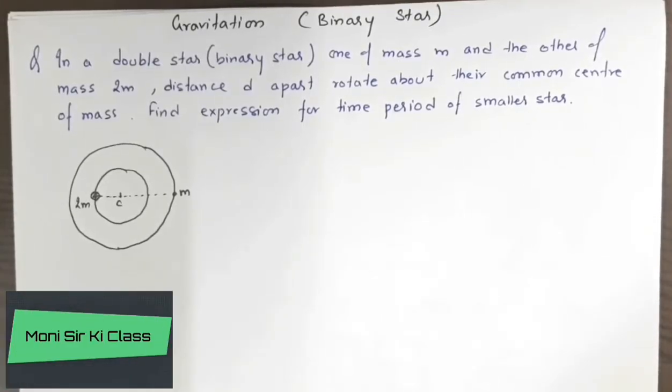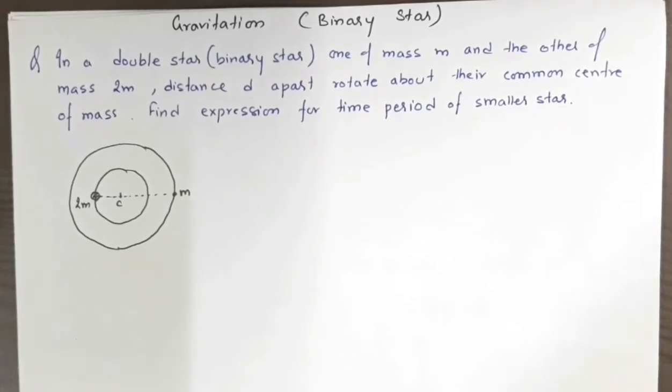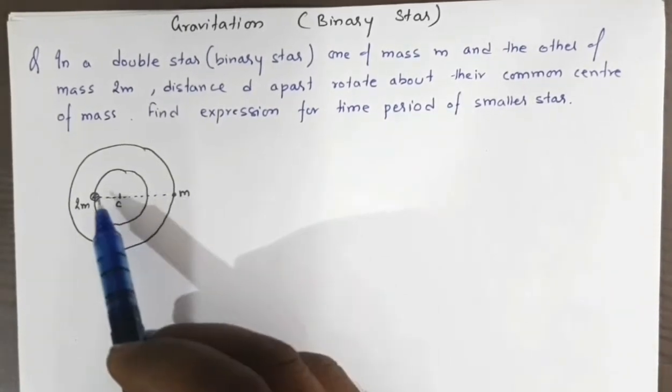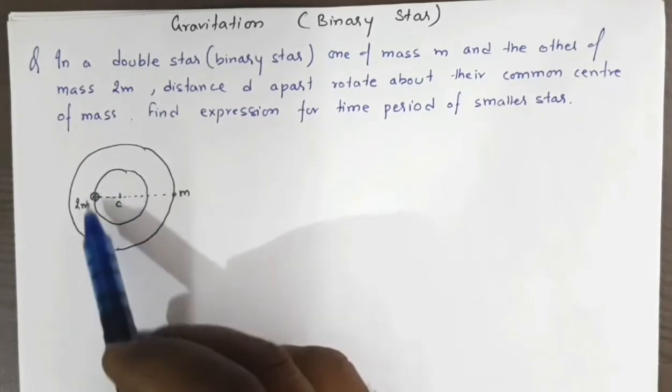Hello everyone, welcome to my channel. In this video we're going to discuss a problem about binary stars from the chapter on gravitation. We have two stars of mass m and 2m revolving about a common center of mass.